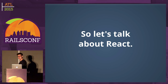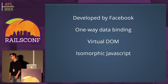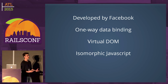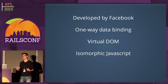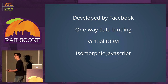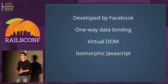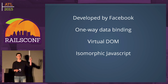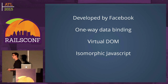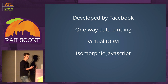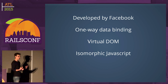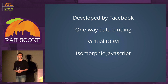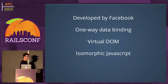Finally, let's talk about React. React was developed by Facebook and has a completely different approach. Instead of two-way data binding, there's one-way data binding — when the model changes, everything re-renders. But rather than touching the real DOM directly, React keeps a virtual DOM. It diffs the virtual DOM against your actual browser DOM and only changes what it needs to, making it really efficient.